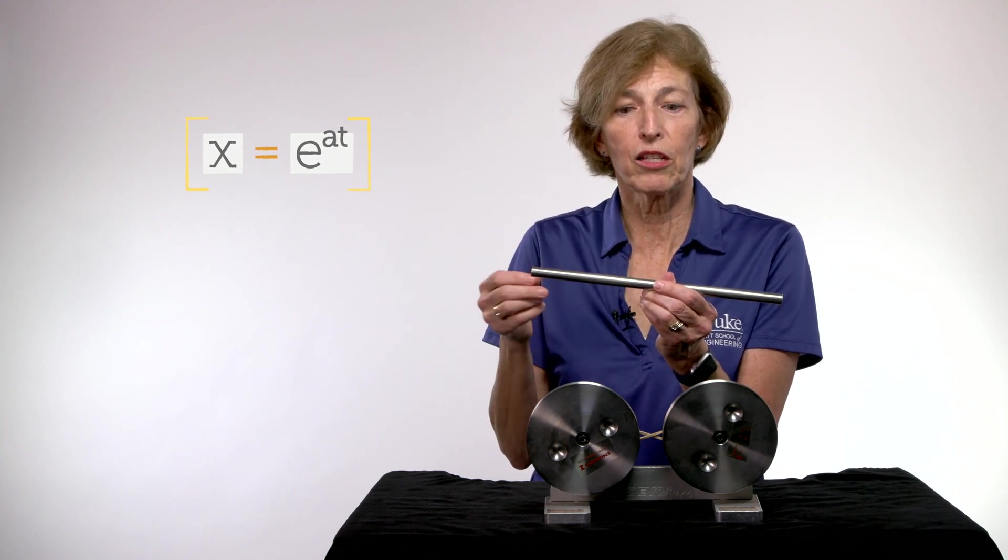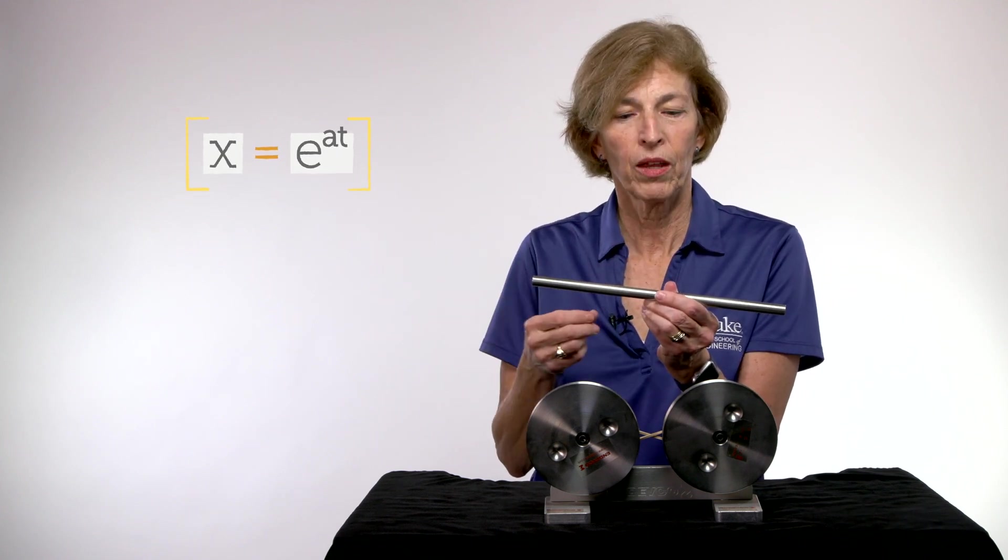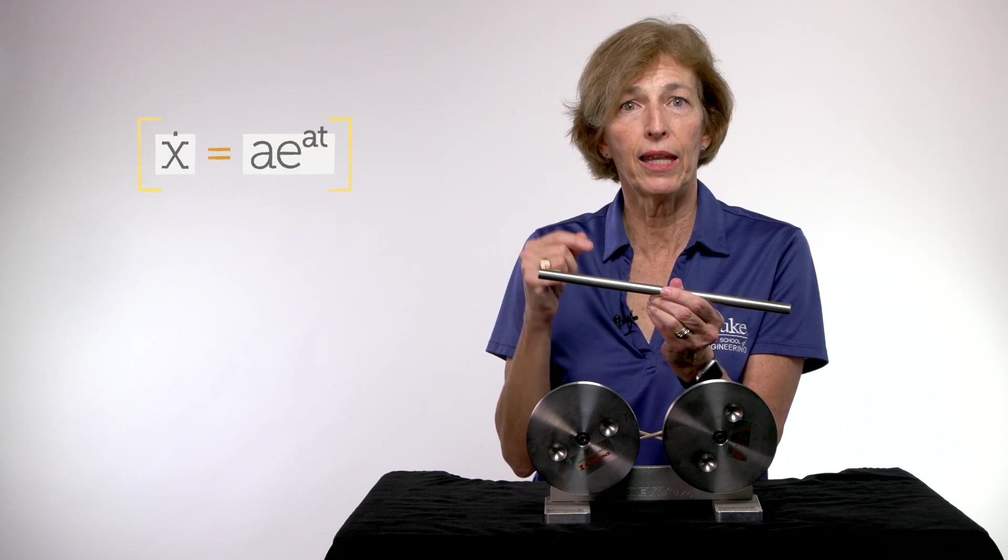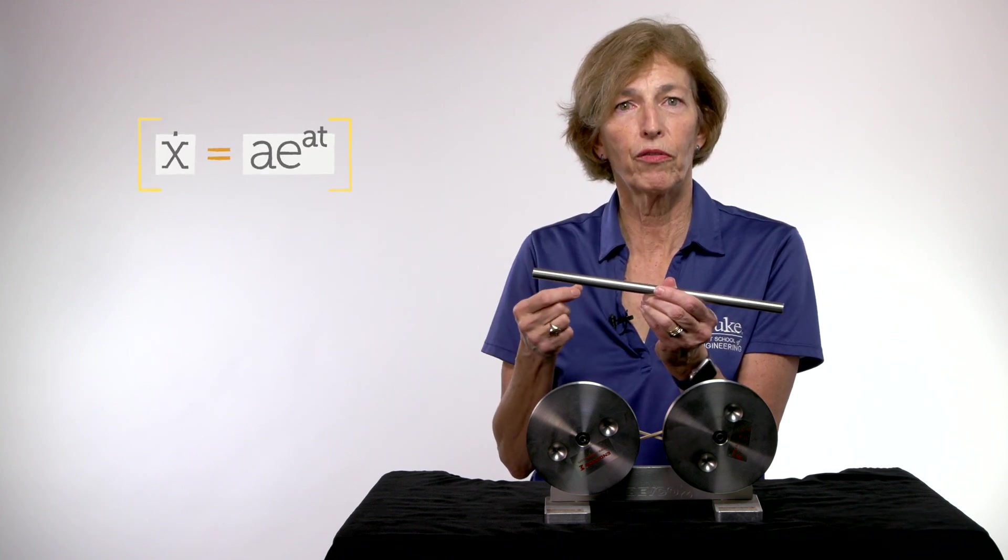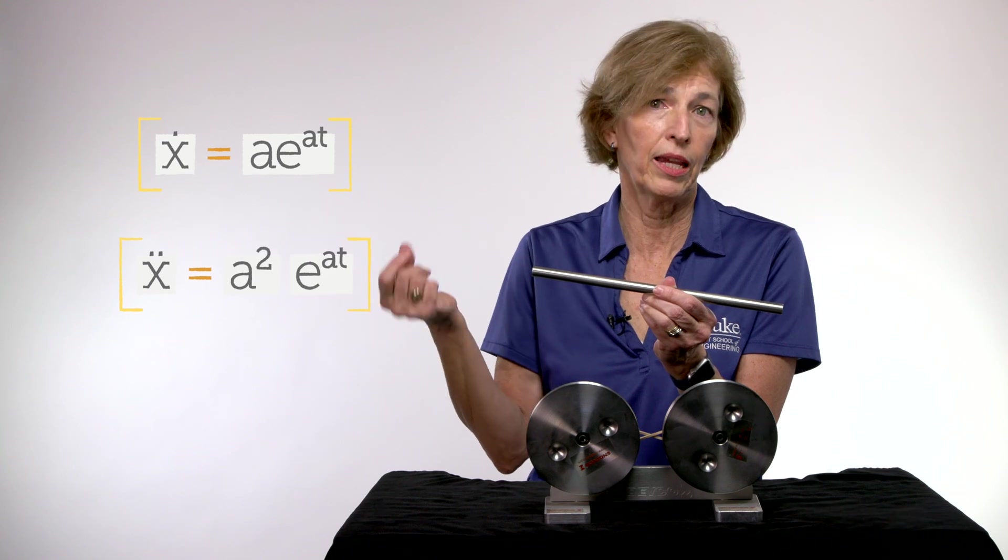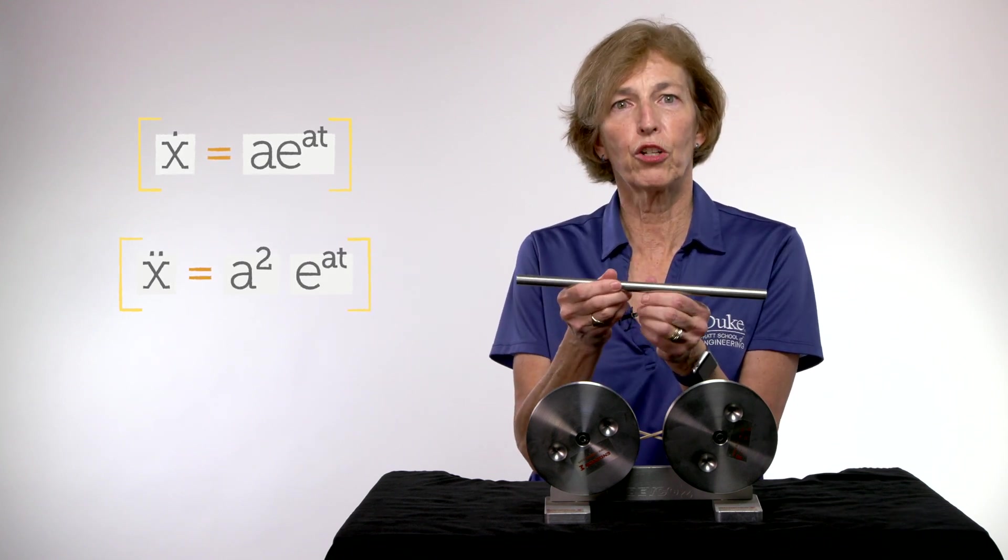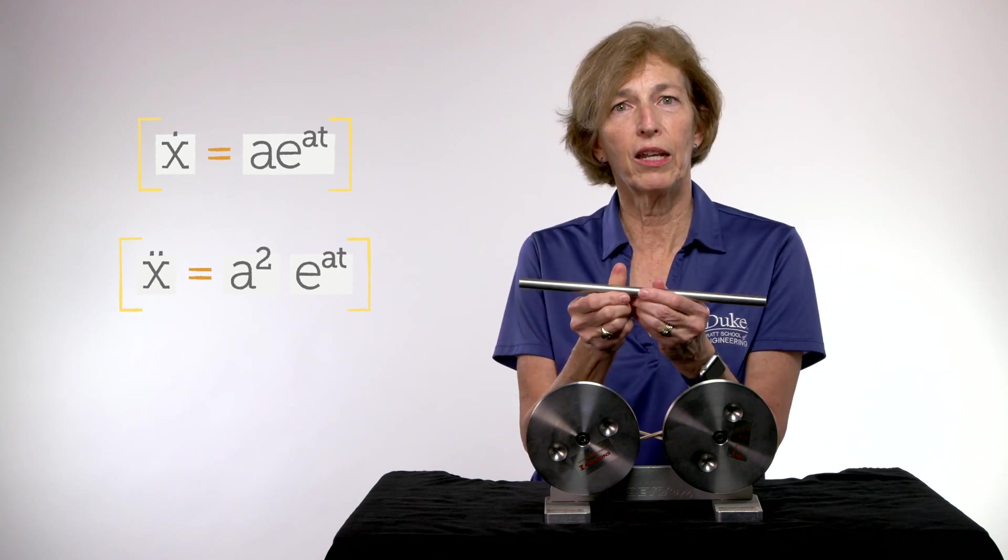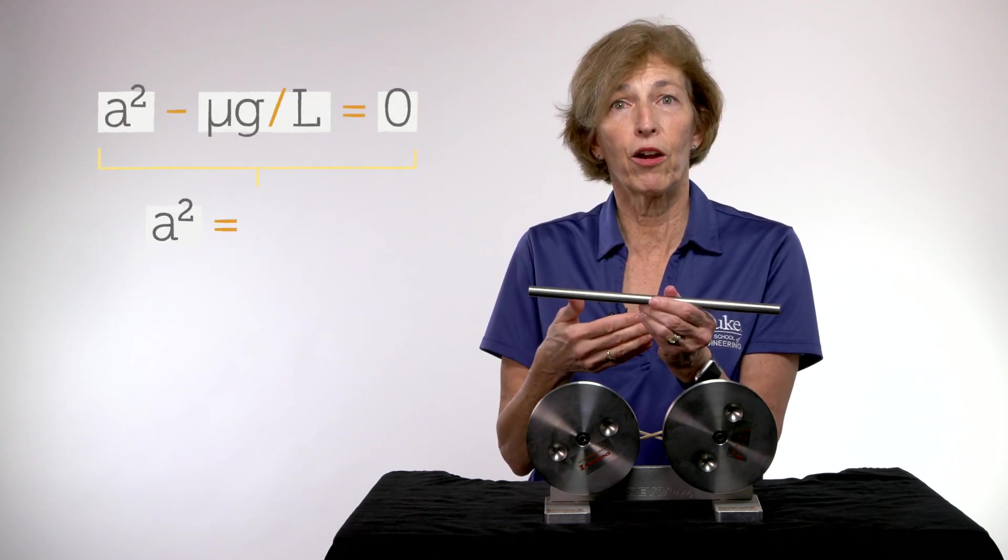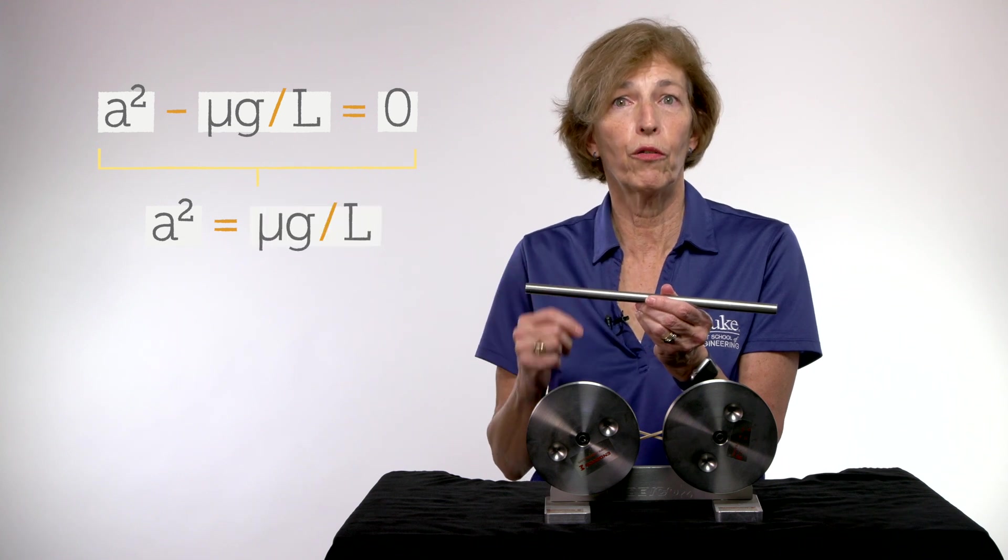So in this case, let's try E to the AT. The first derivative of that would be AE to the AT. And the second derivative would be A squared E to the AT. So now we can substitute those functions back into our equation of motion. And we see that in this case, again, A squared must be equal to mu G over L.